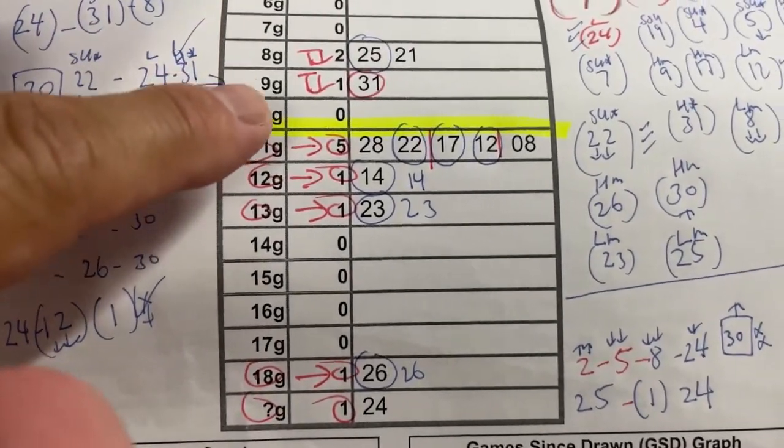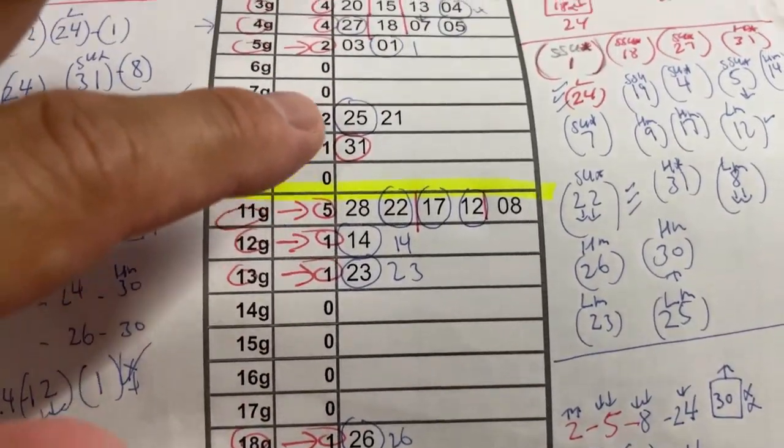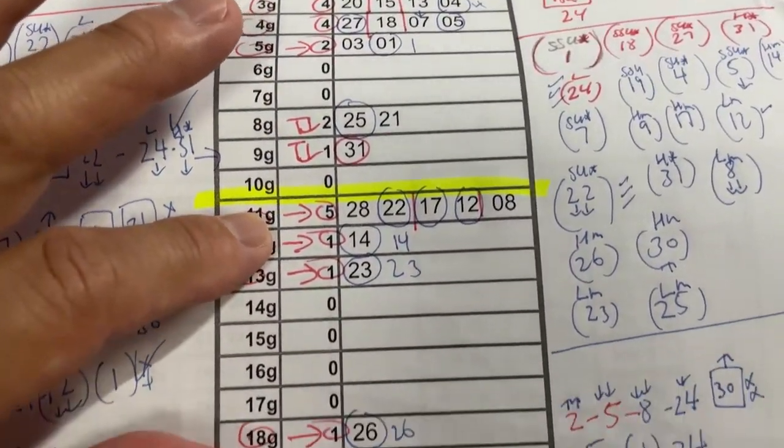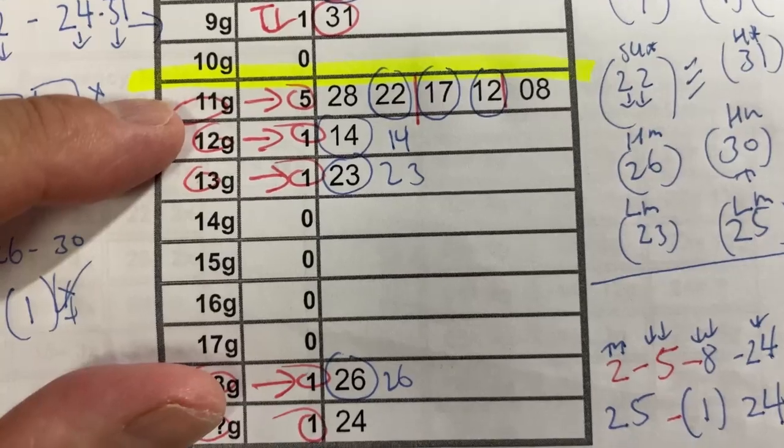Anything below this yellow line are considered cold numbers, and anything above it are warm to hot numbers. I usually choose at least one cold number. In this case there are many.